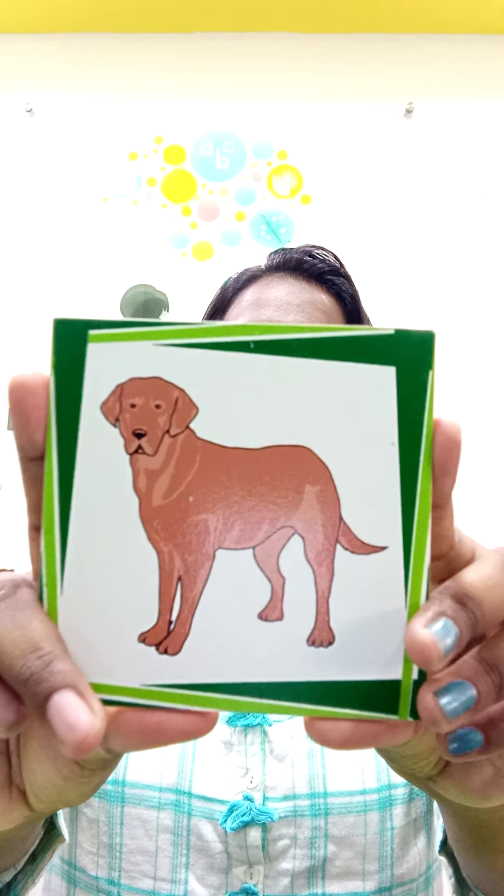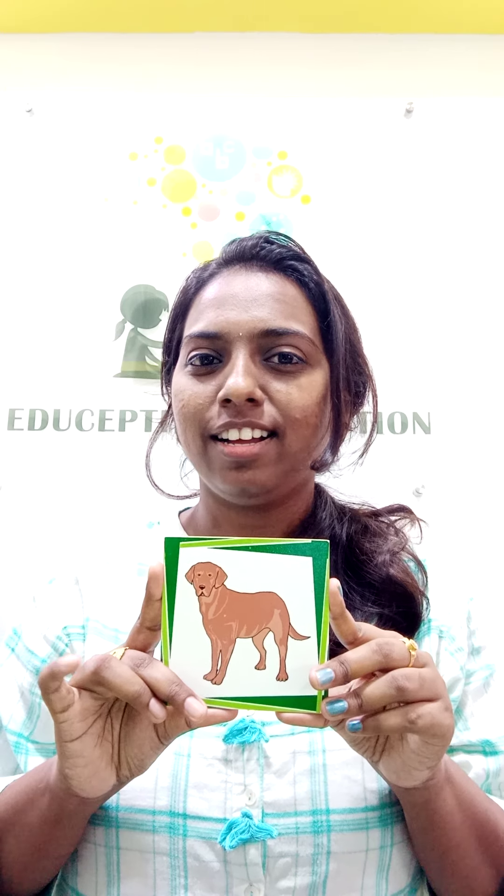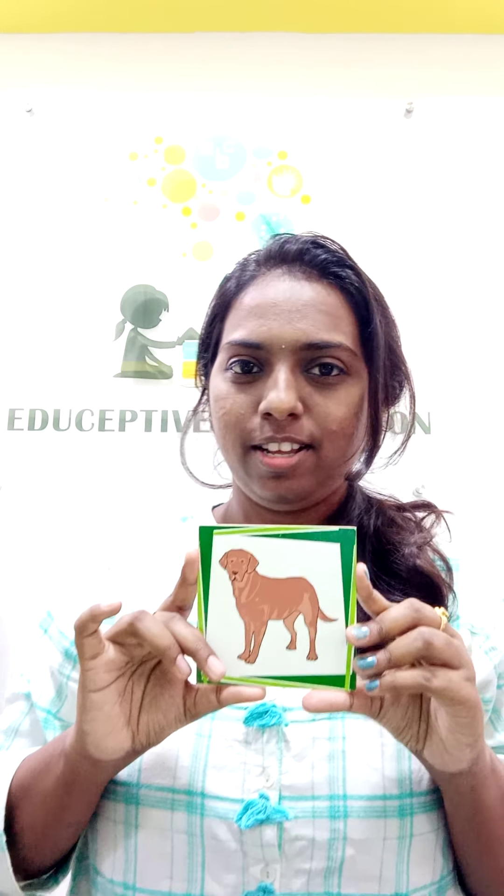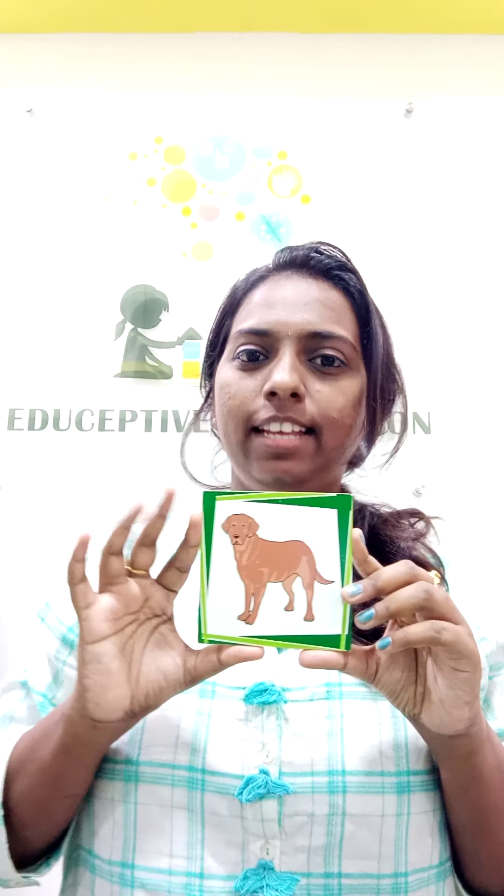Alright, so the next animal is — what is it? Dog. You all know it — it is a dog. In Kannada what do we call it? Naai. In Kannada we call it naai. Shall we move to the next one?